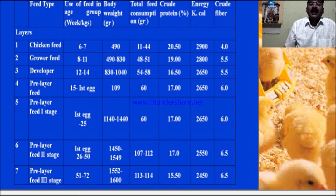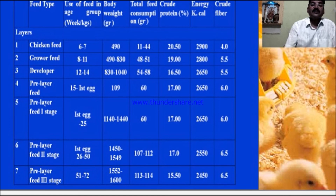Energy levels are also higher at early stages. For crude fiber, chicken feed requires only 4 percent, while at the grower stage it requires 6.5 percent of total feed. These values apply particularly to layers.